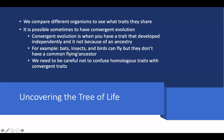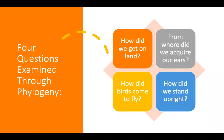Those are called analogies. We have to be careful not to confuse a common ancestor with a convergent trait. We're going to look at four different questions through the lens of phylogeny: How did organisms move from water to land? How did mammals develop their intricate middle ear bones? How did birds come to fly? And how did we end up standing upright — how did we become bipedal?